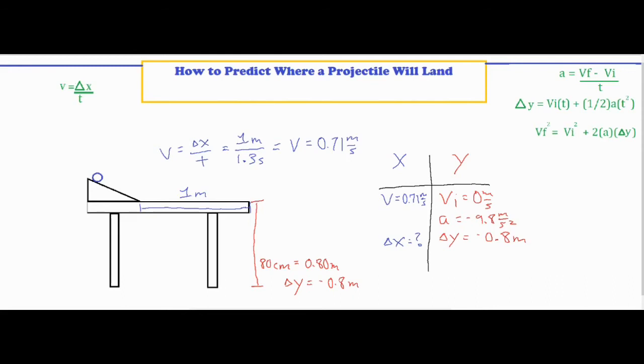So I went ahead and placed my four known variables into the x and y column. So experimentally we went ahead and found that velocity in the horizontal direction which was the 0.71 meters per second. Now all that velocity was directed in the horizontal direction. So we have an initial velocity of 0.71 meters per second in the x direction and an initial velocity of zero in the y direction because the ball isn't being directed up or down as it leaves the table.